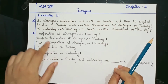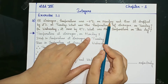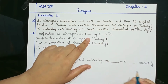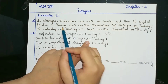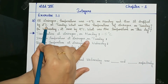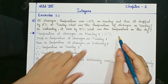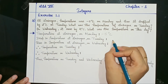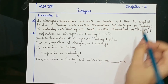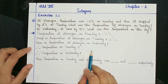First, let us write down the temperatures. Temperature of Srinagar on Monday was minus 5 degrees Celsius. For Tuesday, they told that the temperature dropped by 2 degrees Celsius. So, drop in temperature at Srinagar on Tuesday was 2 degrees Celsius.